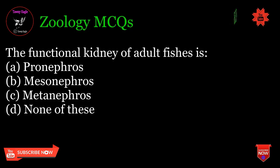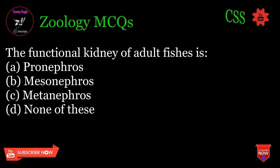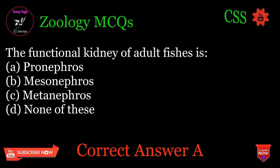The functional kidney of adult fishes is: A. Pronephros, B. Mesonephros, C. Metanephros, D. None of these. Correct answer: A.